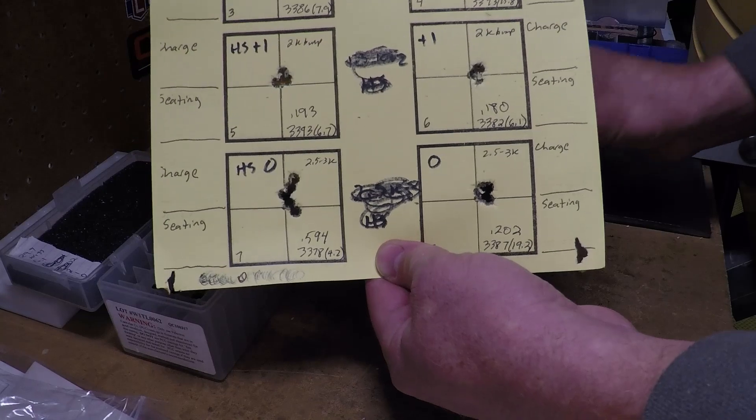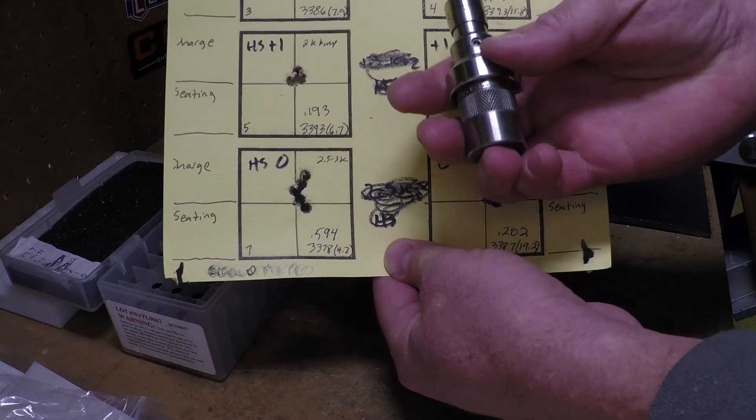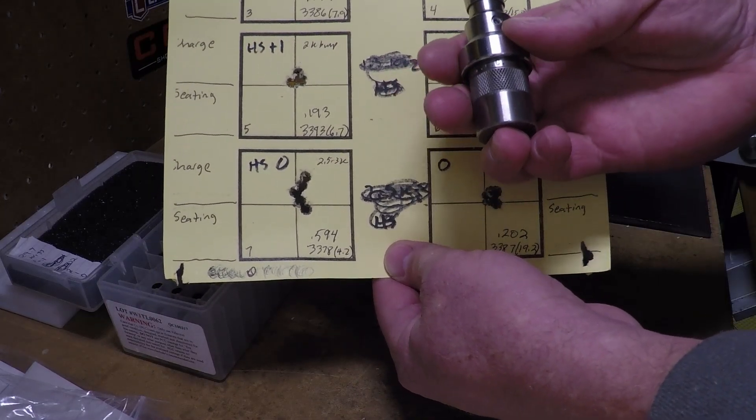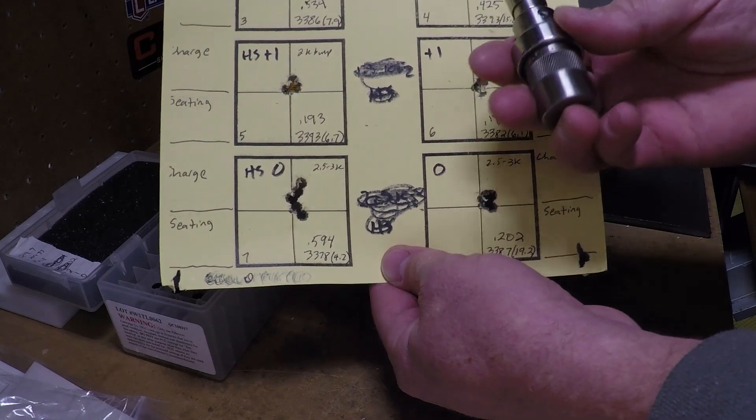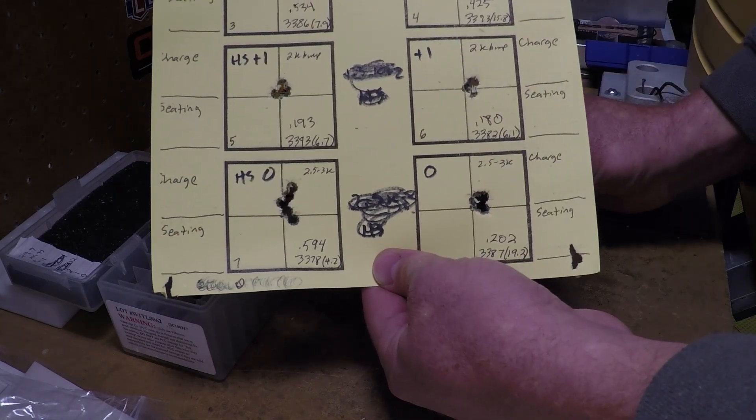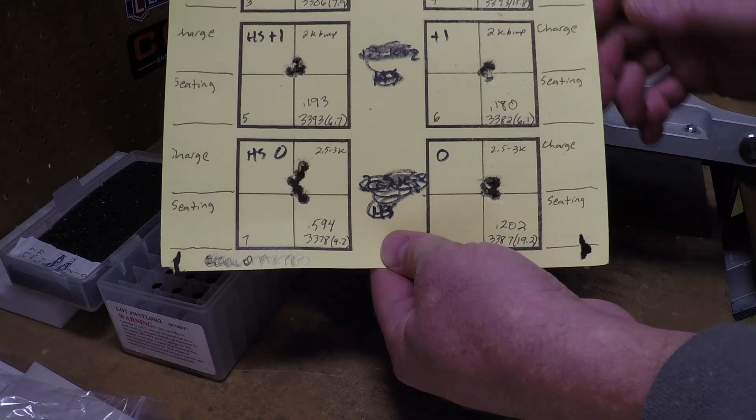And again, you can check the bump with this type of case gauge micrometer, really fast, really quick, easy reading, very reliable, and get a sense for where you've bumped even prior to loading your round.